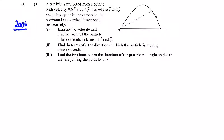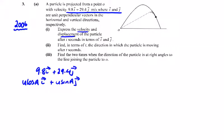In the 2006 projectile question, we're given the velocity of a particle in the i and j direction: 9.8i plus 29.4j, where i and j are unit perpendicular vectors in the horizontal and vertical directions. This represents u cos alpha in the i direction plus u sine alpha in the j direction.